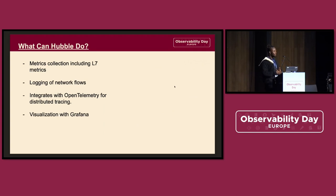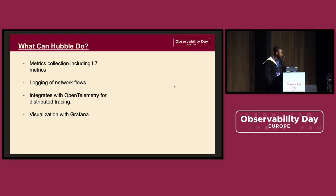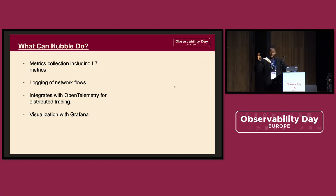What can Hubble do for you? Hubble provides metric collection including L7 metrics. A lot of observability tools can mostly do metric collection at the L3 and L4 layer — IPs, pods, etc. But with Hubble you get L7 metrics as an added benefit. It also provides your network flow, so you can see the communication between all your pods and services. And if you already use OpenTelemetry or any distributed tracing tool, you can take your metrics generated by Hubble and display them on Grafana.